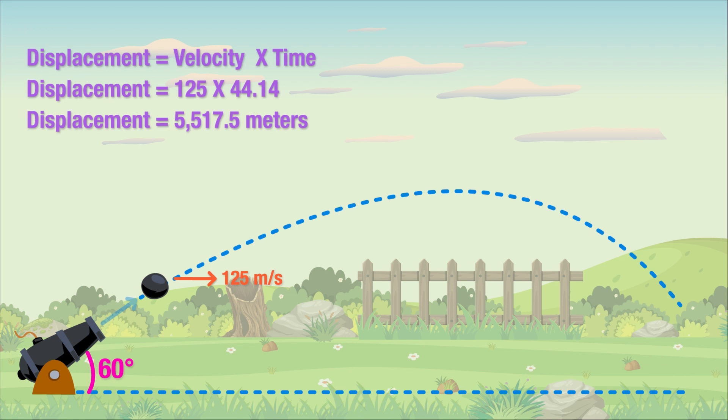Once again, we now plug these values into the displacement time velocity relationship and calculate the total distance traveled, which gives us something like this. Our total horizontal displacement is 5517.5 meters, meaning that's the distance it will travel before hitting the ground.